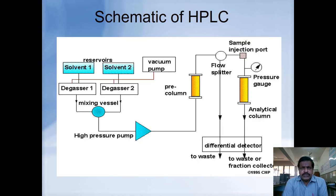This is a general schematic diagram of HPLC where you can see the main components: mobile phase reservoir, pump, column, injector point, collector, and finally the output is displayed in the chromatogram.